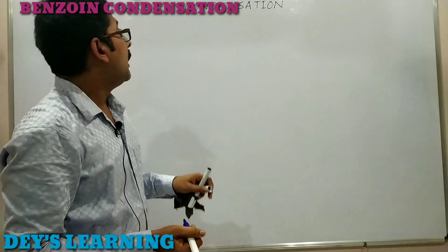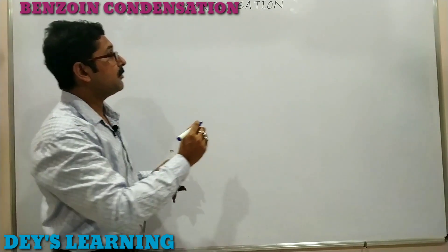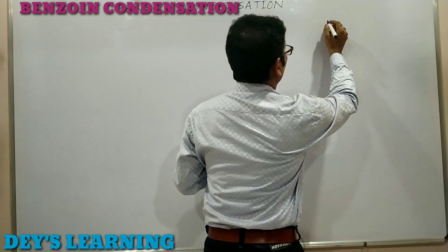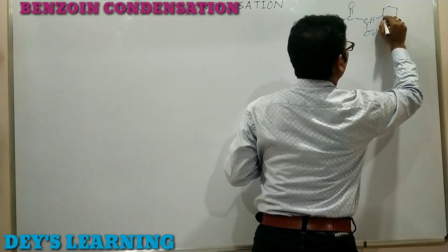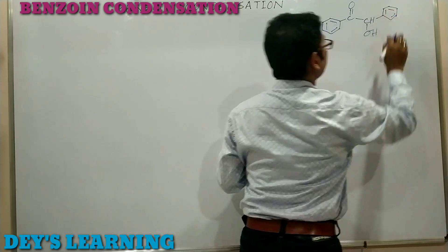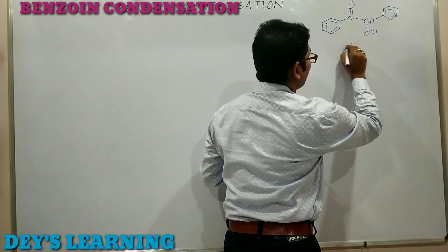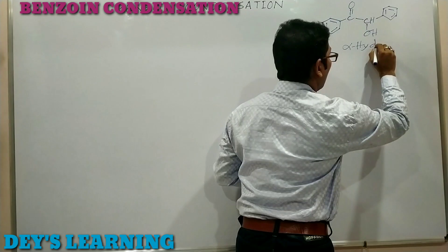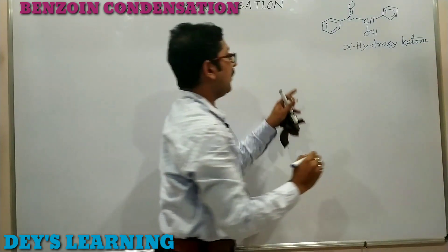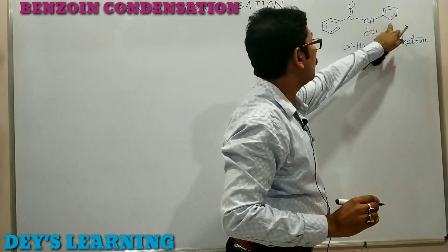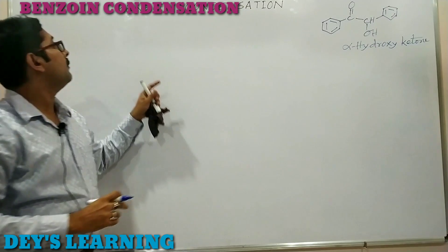Today's topic is benzoin condensation. Benzoin is a hydroxyketo compound containing two aromatic rings. It is an alpha hydroxy ketone, specifically an alpha hydroxy ketone having two phenyl groups at adjacent positions.